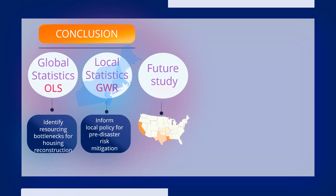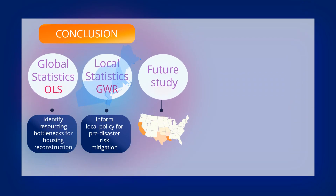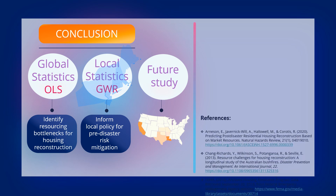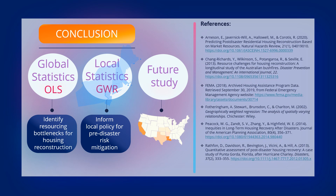Global statistics like OLS may help decision-makers in identifying critical resource bottlenecks for housing reconstruction. However, inferences solely based on global results may not be suitable in specific local settings, as revealed by this case study. GWR maps are a powerful visual tool for informing disaster mitigation policies at a local scale. Future research will identify and map resource bottlenecks present across other disaster-affected regions of the U.S.